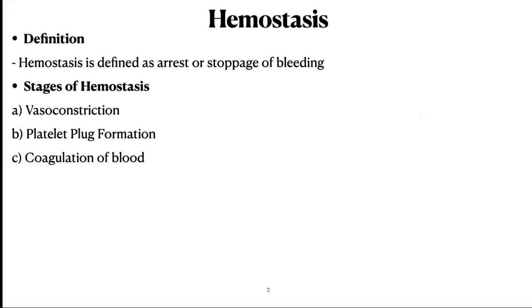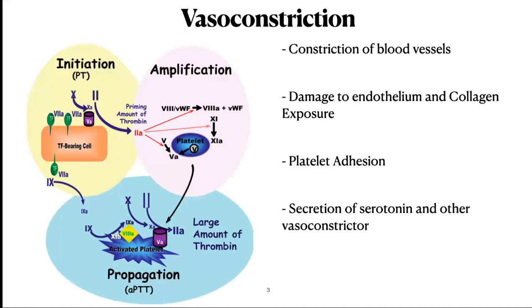Hemostasis is defined as arrest or stopping of bleeding. When a blood vessel is injured, the injury initiates a series of reactions that occur in three stages: vasoconstriction, clot formation, and coagulation of the blood. Immediately after injury, the blood vessel constricts and decreases the loss of blood from the damaged portion. When blood vessels are cut, the endothelium is damaged and collagen is exposed, so platelets adhere to this collagen and get activated.